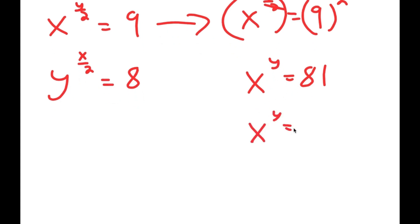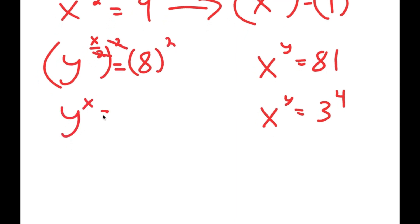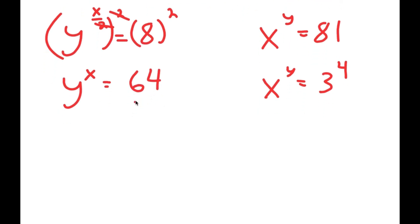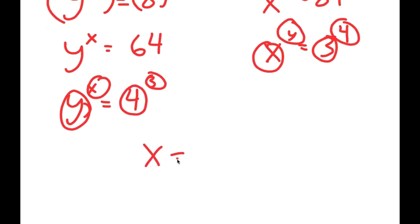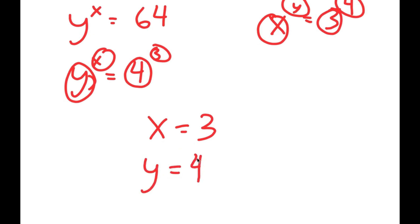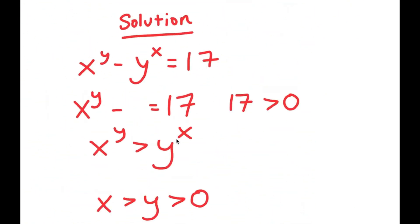Now 81 I can rewrite as 3 to the power of 4. Doing the same thing to y to the power of x over 2 equals 8, taking the power of 2 on both sides, I get y to the power of x equals 64. And 64 I can rewrite as 4 to the power of 3. So I have x to the power of y equals 3 to the power of 4 and y to the power of x equals 4 to the power of 3. This means x equals 3 and y equals 4. So this is my solution to this equation.